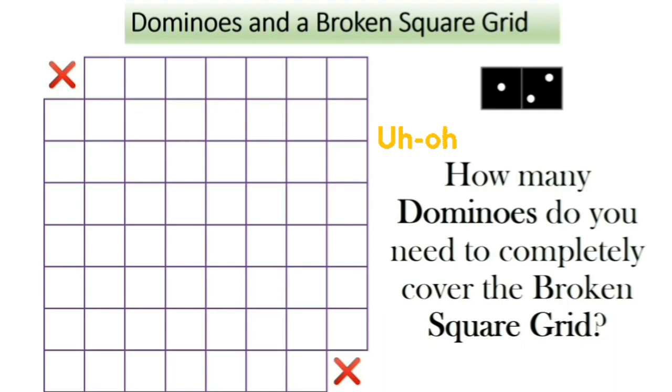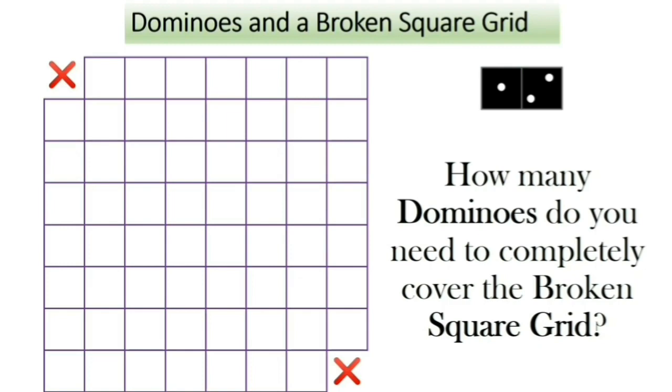Let's move on. Now, I've broken two corner pieces of the square grid. So this is a broken square grid. And the same question, how many dominoes do you need to completely cover the broken square grid? Let's use the same approach. We have 64 minus 2, that is 62 squares, and a domino covers 2 squares. So the answer should be 62 divided by 2, that is 31. Is that the answer you also got? Let's find out.